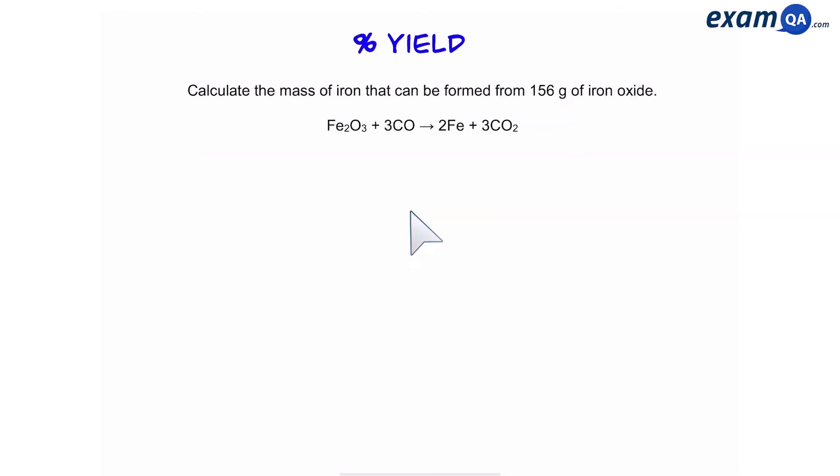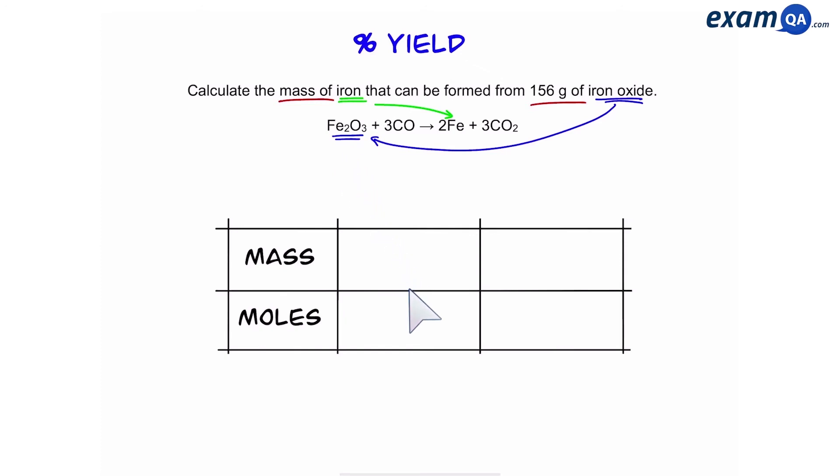Let's try another question. Calculate the mass of iron that can be formed from 156 grams of iron oxide. Again, mass of and grams of to help us identify which chemicals to use for our calculation. So that means iron and iron oxide are the main chemicals. Again, we're going to make our table with iron oxide and iron.